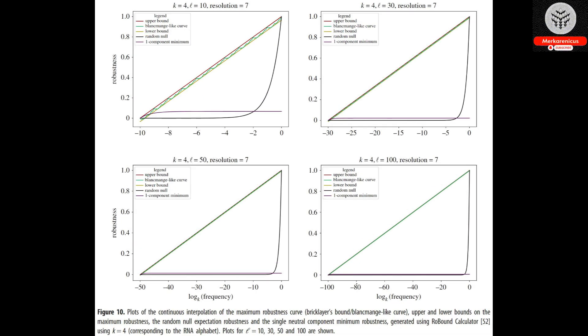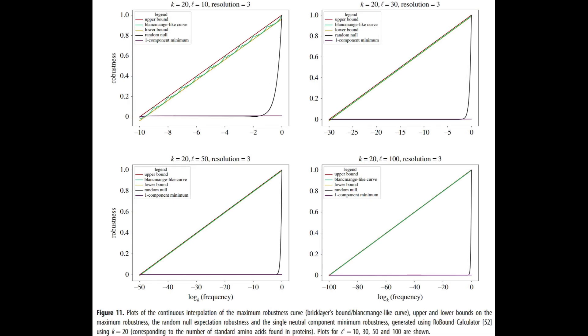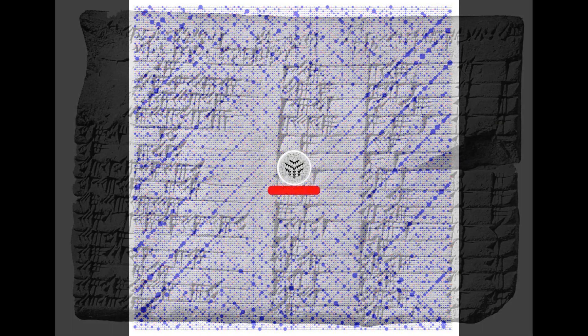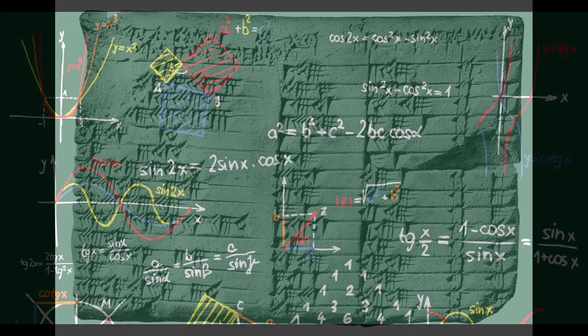To add to the surprises, it was discovered that the maximum level of robustness is also connected to the renowned Takagi function, a peculiar function that exhibits continuity throughout but lacks differentiability. The reason this fractal function is sometimes referred to as the Blanc Mange curve is due to its resemblance to the famous French dessert.